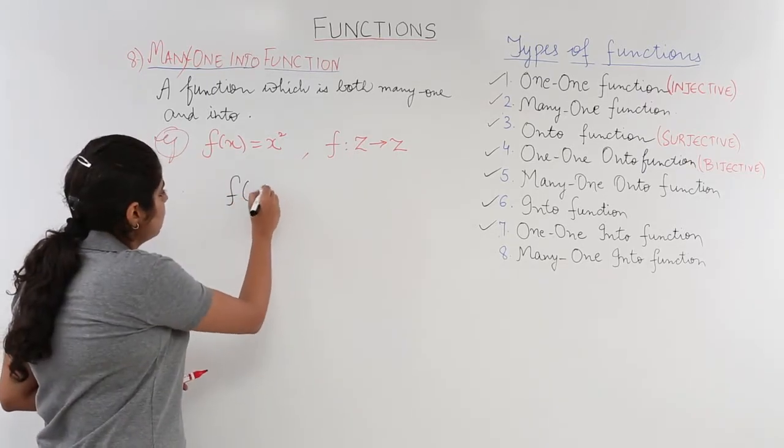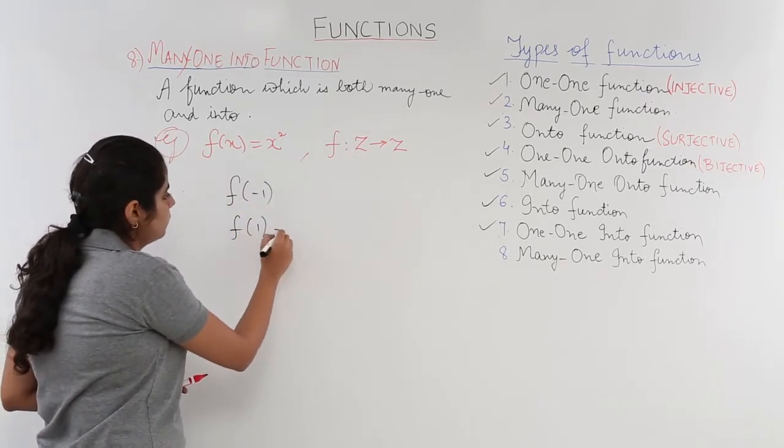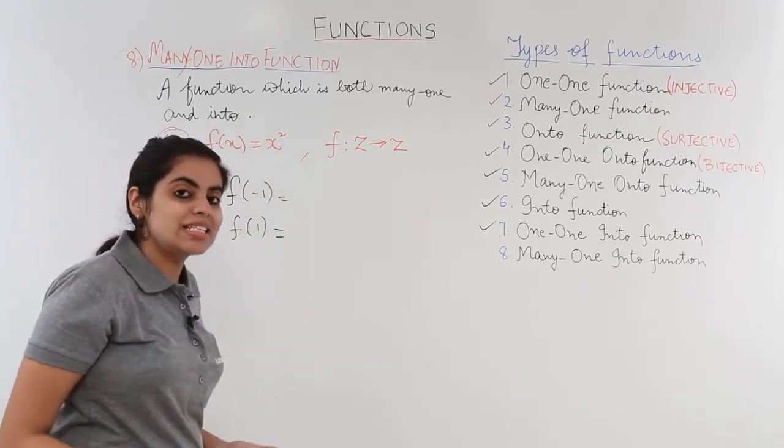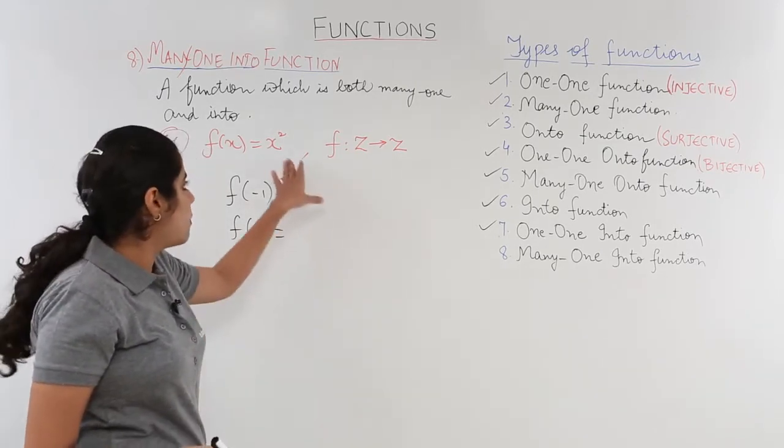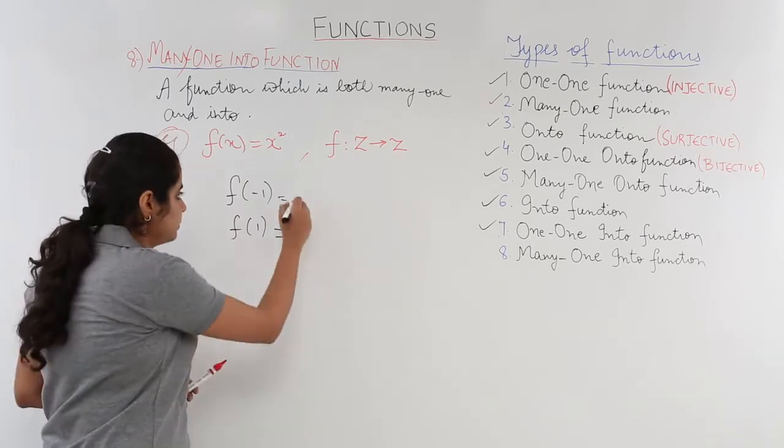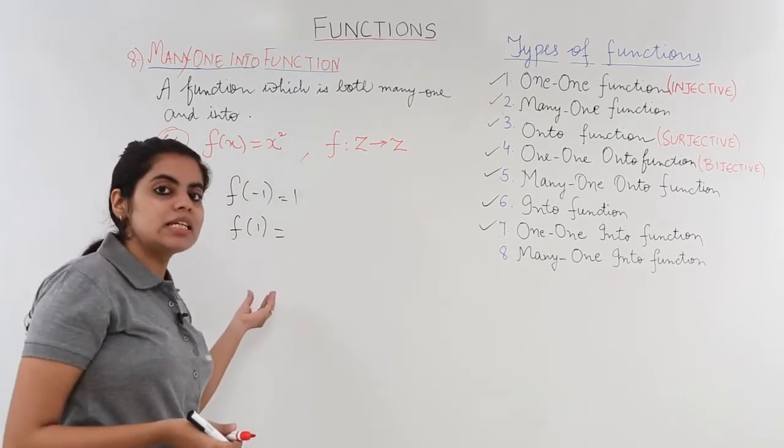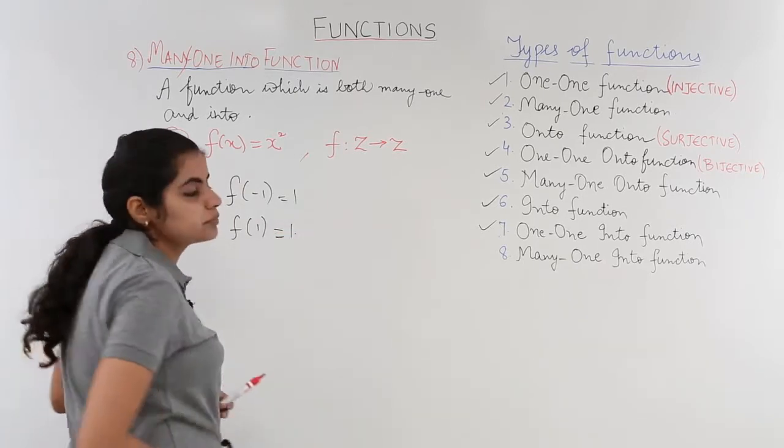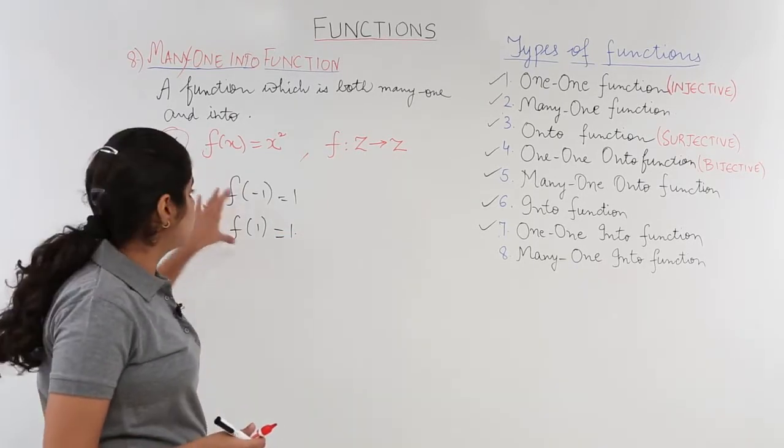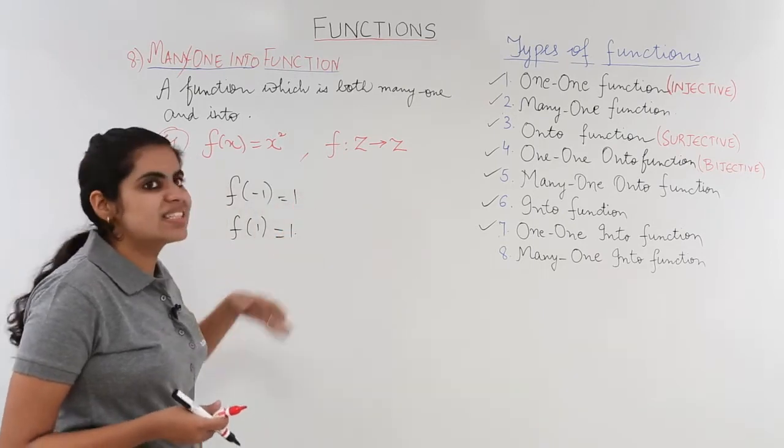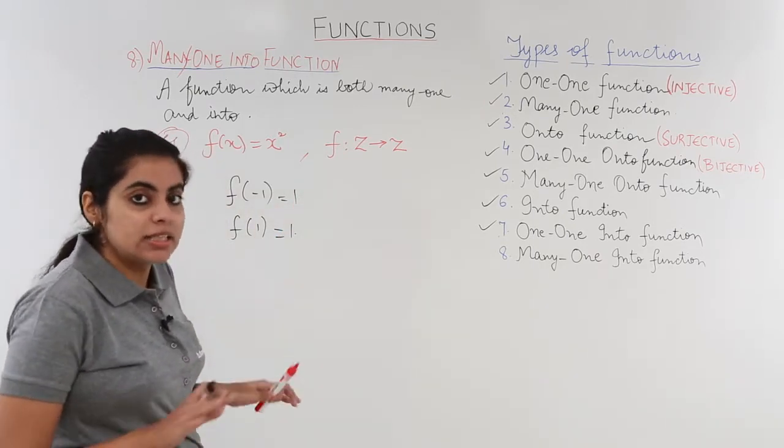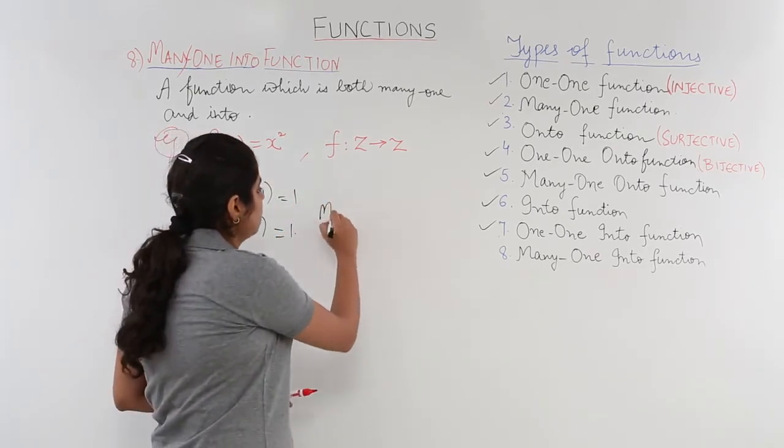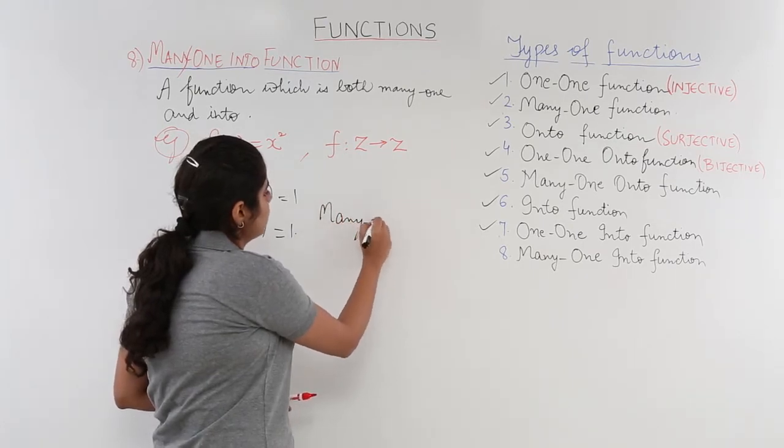Can you observe one fact in this problem? When x = -1, (-1)² will give me 1. And when x = 1, 1² would also give me 1. That means different elements have got one same image. Hence this is not one-one; rather this is many-one function.